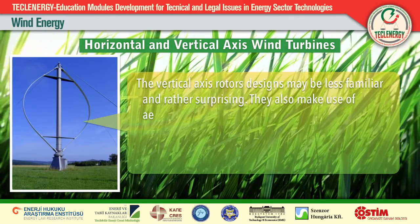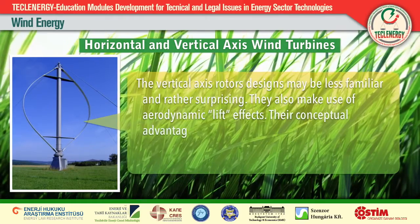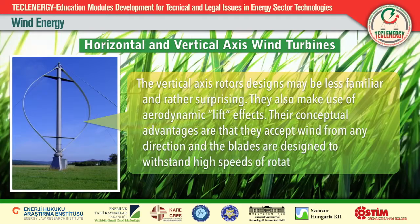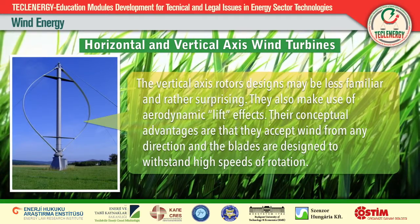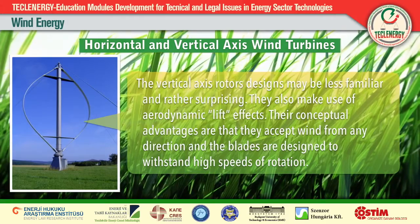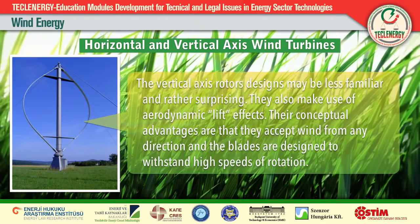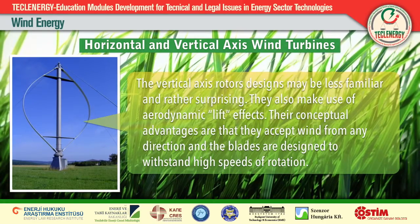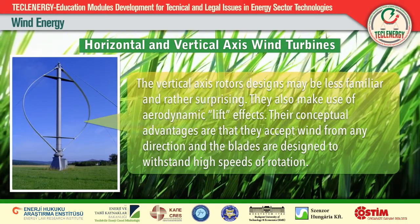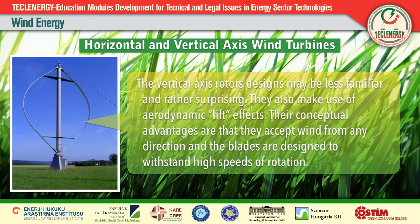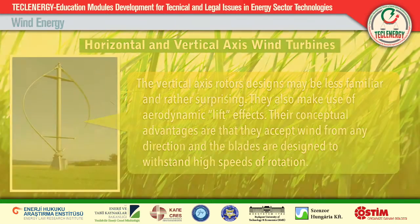The first wind-powered machine was for grinding — in other words, milling flour — apparently in the 7th century in Persia, operating on a vertical axis. Only after five more centuries did the familiar horizontal axis windmill appear in England. Windmills continued to be used until displaced by electric motors during the 20th century, but by that time wind was already being used to generate electricity.